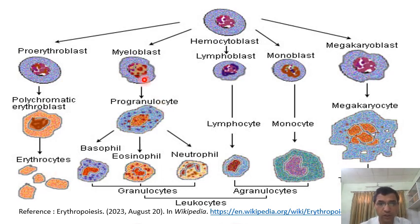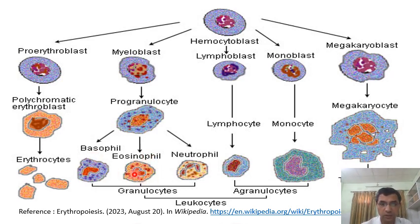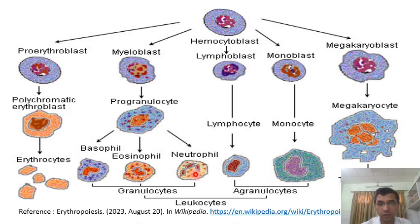If you talk about the myeloblast, it undergoes mitotic divisions and becomes progranulocytes. These progranulocytes subdivide into basophils, eosinophils, and neutrophils. Granule-like structures are present in these cells, which is why they are known as granulocytes. Basophils are stained by basic dye; eosinophils are stained by acidic dye; and neutrophils react to both basic and acidic dye. An important point: the neutrophil is the first cell which arrives at the site of infection — note this down for your competitive exams.